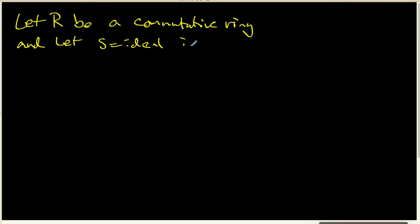In this video, what I want to do is let R be a commutative ring, and I'm going to let S be an ideal in R.